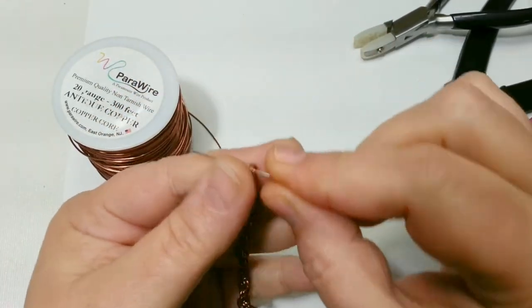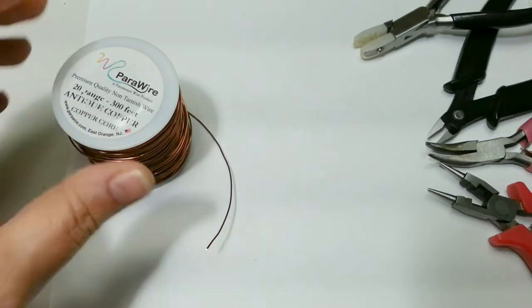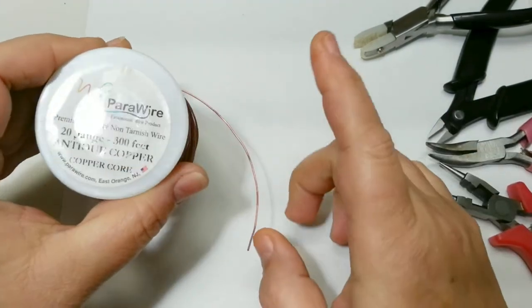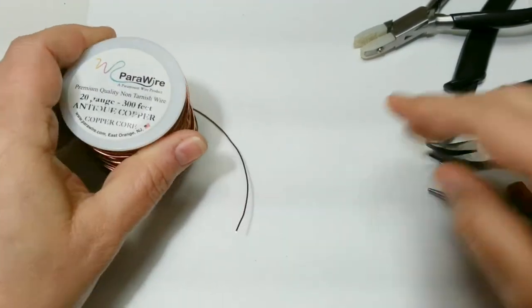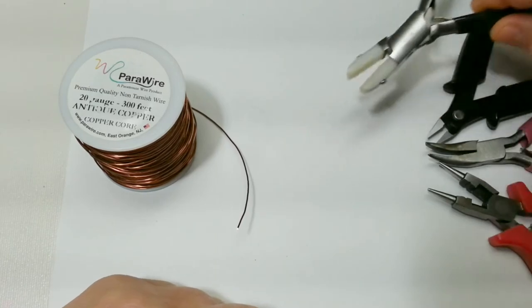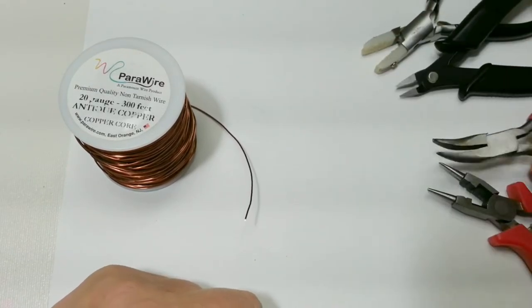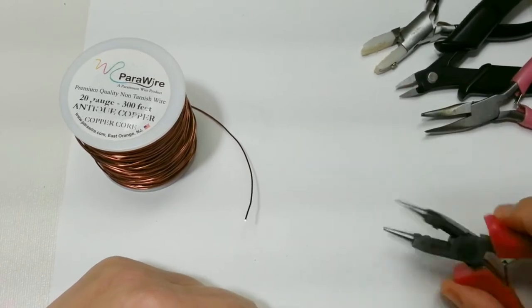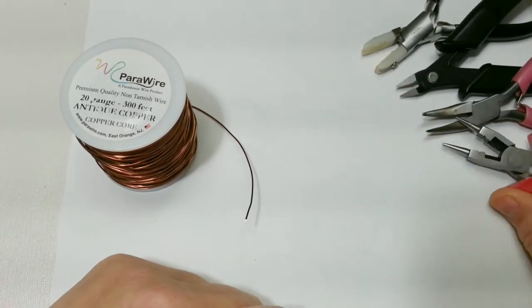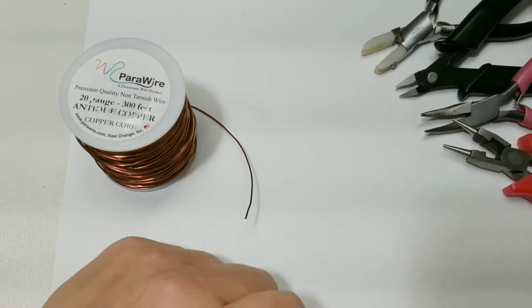So I'm going to explain how to do this but the materials you need are wire and I'm using 20 gauge wire to do this, wire straighteners to straighten the wire to start with. You need flush cutters, some kind of pliers in case you need to tweak something and definitely need round nose pliers. So let's get started.